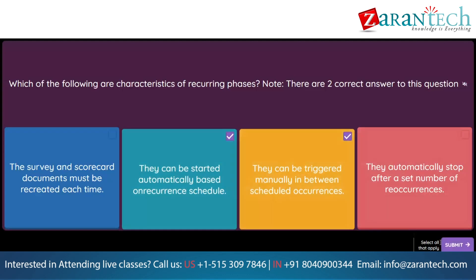Question. User A is a member of the following global groups: supplier risk user, sourcing agent, and supplier request manager. How can User A add a new supplier to the company's database? Note, there are two correct answers. Option 1: Initiate a supplier request from the create menu on the dashboard. Option 2: Import the supplier record in SM administration. Option 3: Create a supplier request while sending out modular questionnaires. Option 4: Create a supplier request while adding participants to a sourcing event.